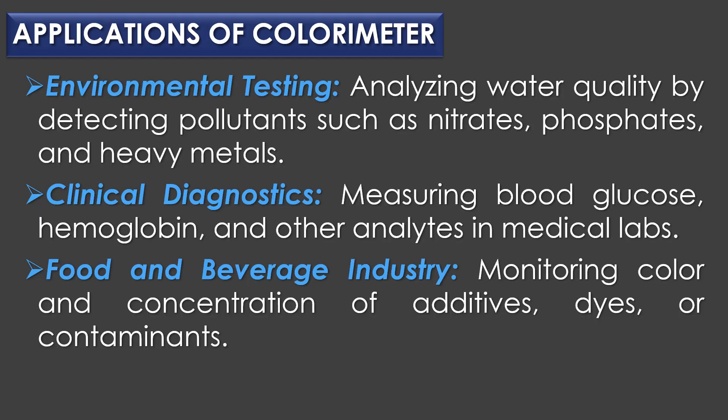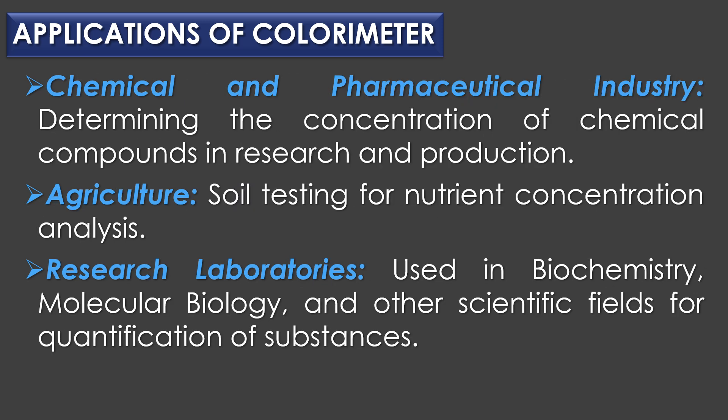Applications of colorimeter: In environmental testing, it is used for analyzing water quality by detecting pollutants such as nitrates, phosphates, and heavy metals. In clinical diagnostics, it is used for measuring blood glucose, hemoglobin, and other analytes in medical labs. In the food and beverage industry, it monitors color and concentration of additives, dyes, or contaminants. In the chemical and pharmaceutical industry, it is used for determining the concentration of chemical compounds. In agriculture, it is used in soil testing for nutrient concentration analysis. In research laboratories, it is used in biochemistry, molecular biology, and other scientific fields for quantification of substances.